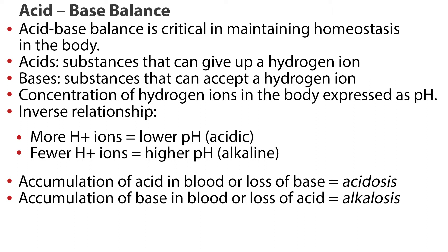Hydrogen ions have an inverse relationship to the pH. More hydrogen ions cause a lower pH, which is acidic. Fewer hydrogen ions cause a higher pH, which is alkaline. The accumulation of acid in the blood, or a loss of base, causes acidosis. The accumulation of base in the blood, or a loss of acid, causes alkalosis.